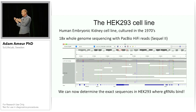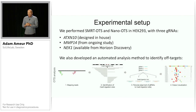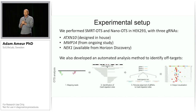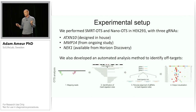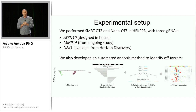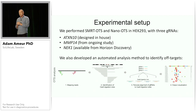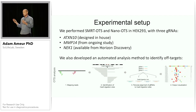With this genome sequenced, we can determine the exact sequences where the guide RNAs are actually binding. The experimental setup used three different guide RNAs — called ATXN10, MMP14, and NEC1 — and we applied both the Smart OTS and Nano OTS protocols. We also developed an analysis method to identify off targets at base pair resolution.